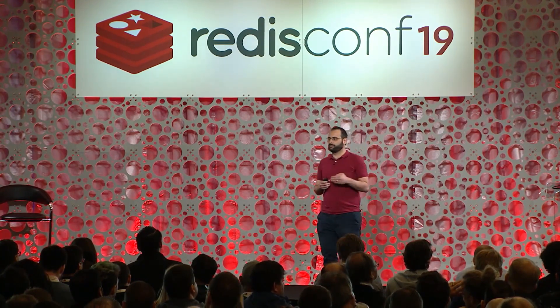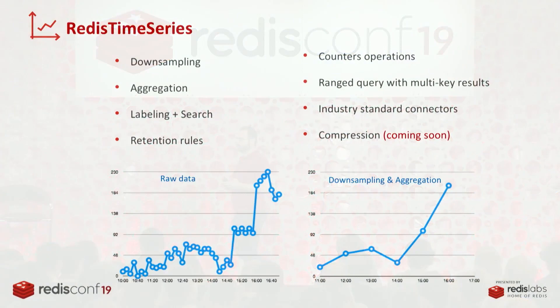On top of that, each key can have its own retention rules and you can pick how much time you want to keep the data, which makes your memory footprint lower. In addition to the regular time series use case, we also thought about new use cases. A lot of folks use Redis today for counting — if you use incrby, you can use it with Redis Time Series and also have the history of your counters. You can query the latest value of your key, but you can also query the history and see your counters over time.